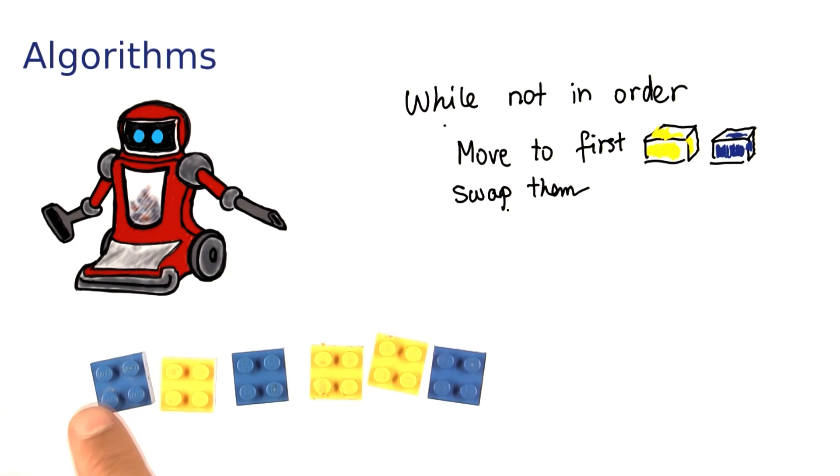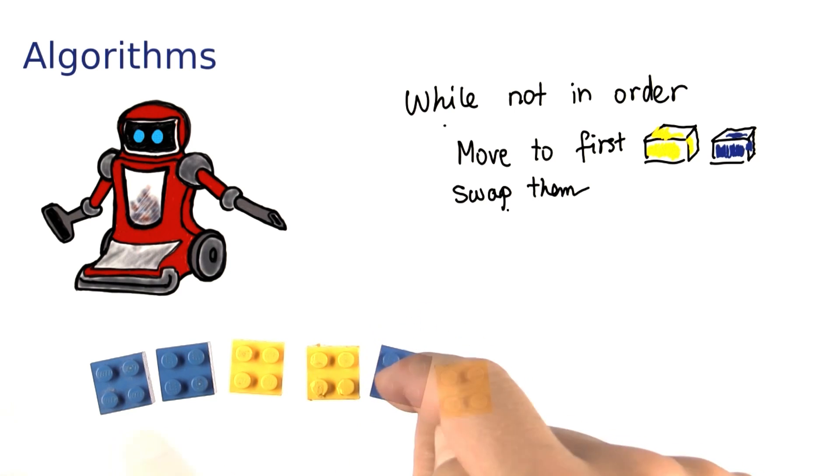So Robbie would go along, starting at the left, until it finds a yellow one before a blue one. Swap the two, and then it would do it again. In the next step, it would scan from the left until it finds a yellow one before a blue one, and swap them, and again.